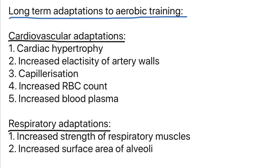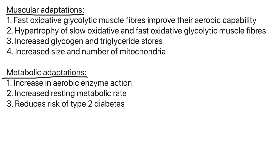The next is respiratory adaptation. There is increased strength of respiratory muscles and increased surface area of alveoli, which increases the diffusion gradient. The next is muscular adaptation. Your fast oxidative glycolytic muscle fibres improve their aerobic capacity. You get hypertrophy of slow oxidative and fast oxidative glycolytic muscle fibres. Glycogen and triglyceride stores increase — these are aerobic energy fuel stores — and there is increased size and number of mitochondria, which helps produce ATP aerobically more frequently, as mitochondria are the site of aerobic respiration.